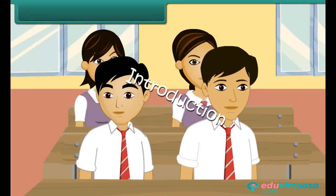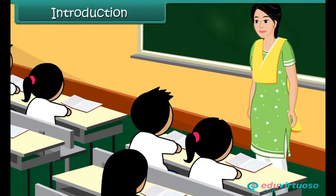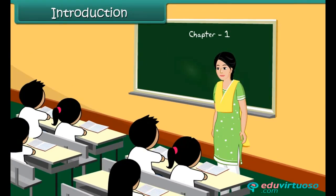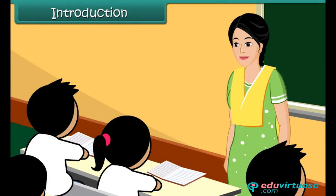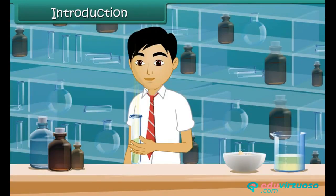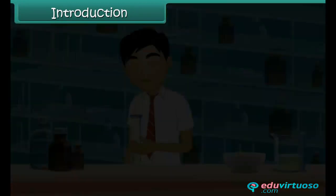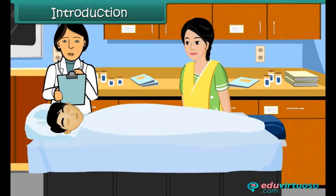Amun is eight years old and extremely naughty. Today the science teacher has promised to take Amun's class to the chemistry laboratory to demonstrate some experiments. Once in the lab, Amun wanders away from the group. He finds a test tube with a bright colored solution on a table. Out of curiosity, he smells it. He takes ill immediately and complains of nausea and severe headache.